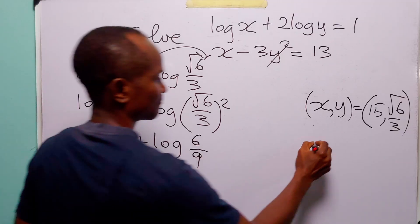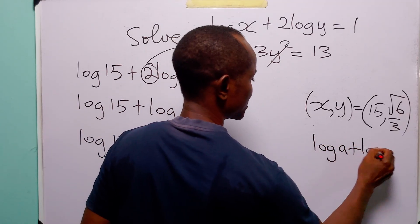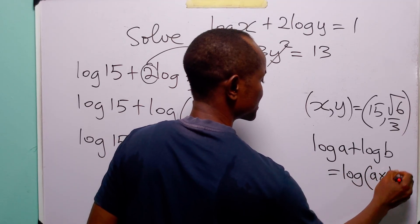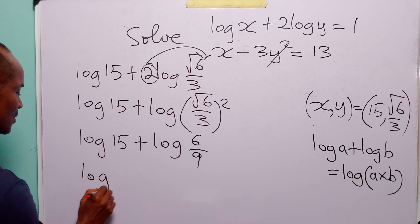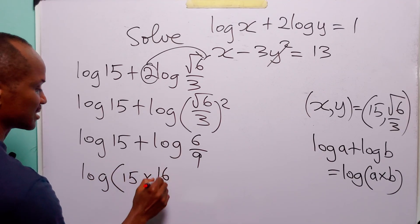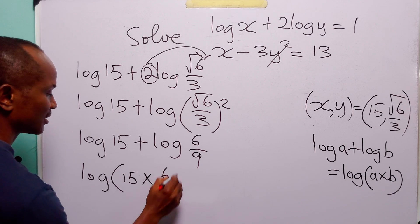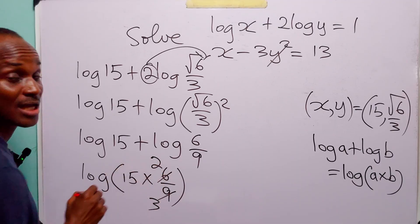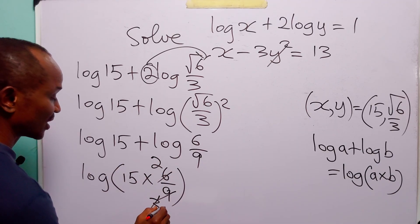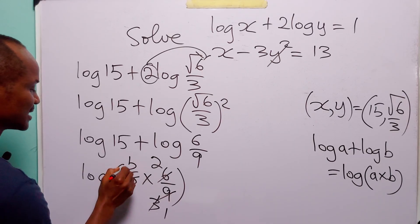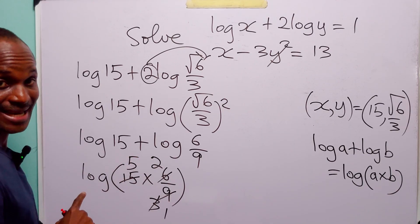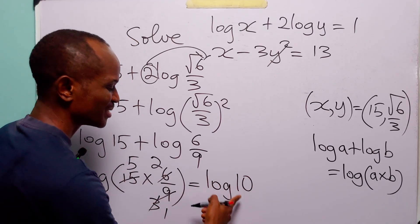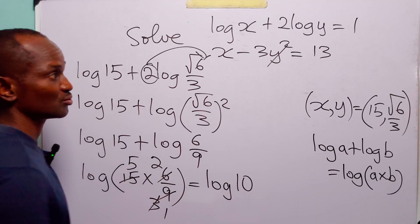We have log 15 plus log(6 over 9), since root 6 squared is 6 and 3 squared is 9. Because log A plus log B is equal to log(A times B), we have log(15 times 6 over 9). Simplifying: 3 into 9 is 3, into 6 is 2, and 3 into 3 is 1, into 15 is 5; so 5 times 2 is 10. This gives us log 10, which is log base 10 of 10, equal to 1.